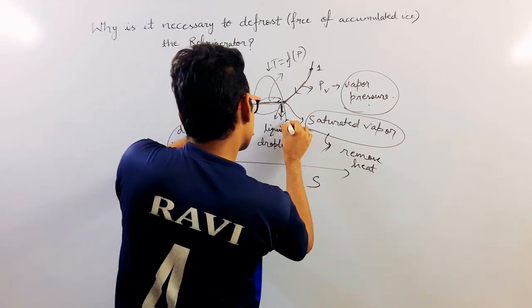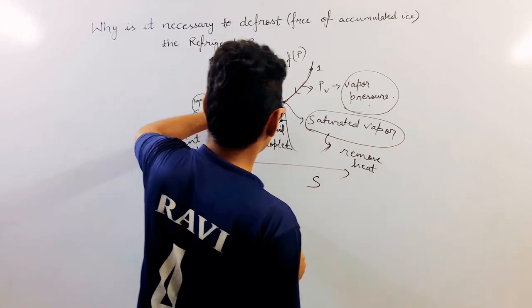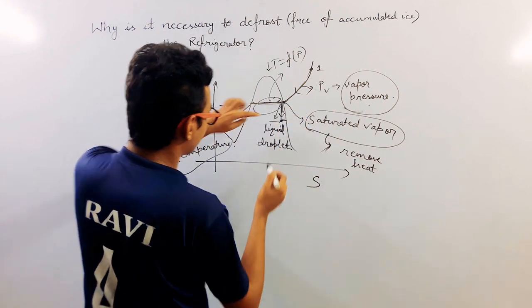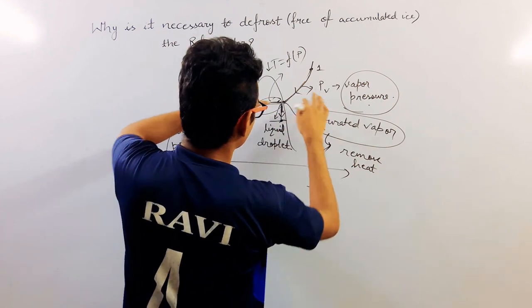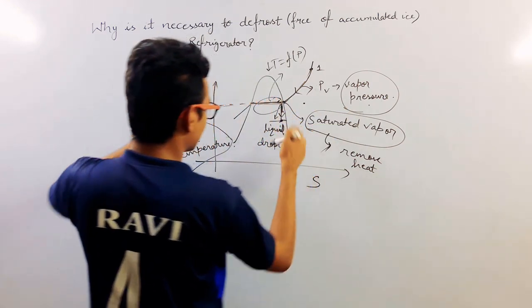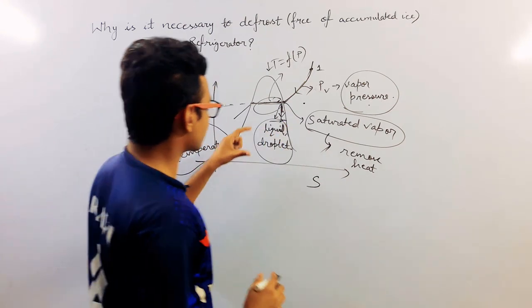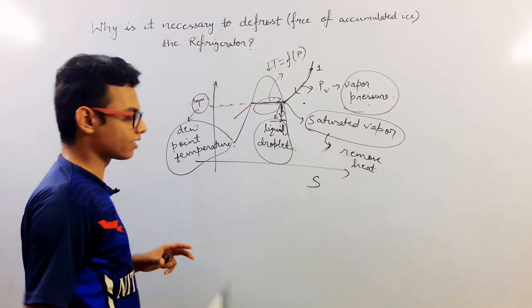And hence, the liquid droplets will form like this. Inside this region, liquid droplets are there. Here, superheated vapor, no liquid. So inside this region, liquid droplets will form. So this is what happens in case of refrigerator.